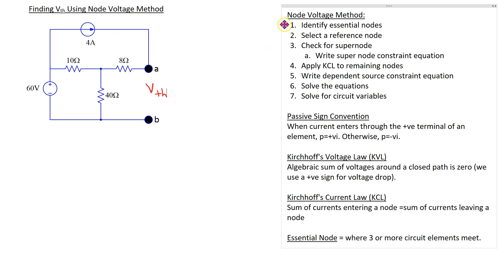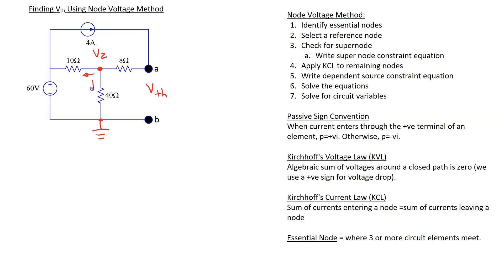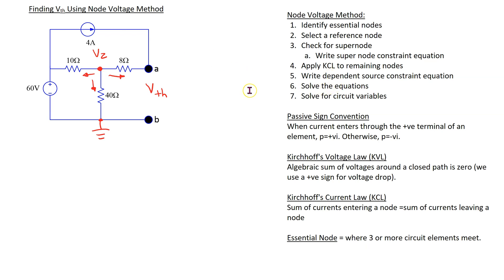The main steps in applying the node voltage method are shown here. We start by identifying the ground node, and then we only have one essential node left in the circuit. Suppose we denote that as Vz. Now we need to assume branch current directions and apply Kirchhoff's current law to this node.